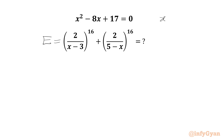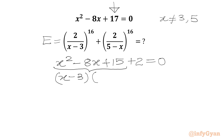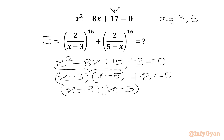If we check our quadratic at x equal to 3, it is not satisfied, so x cannot be 3. At x equal to 5, it is also not satisfied, so x cannot be 3 or 5. Now we rewrite the quadratic x squared minus 8x plus 17 by splitting: we write (x minus 3)(x minus 5) plus 2 equals 0, which gives us (x minus 3)(x minus 5) equals minus 2.